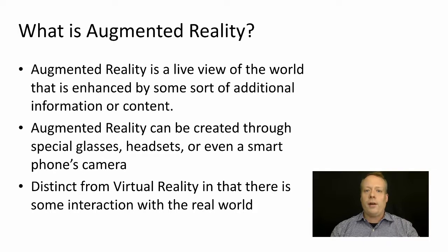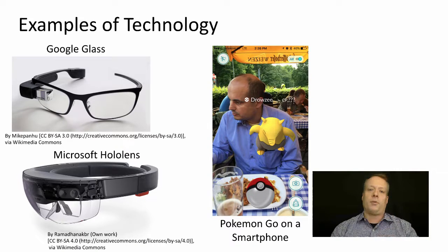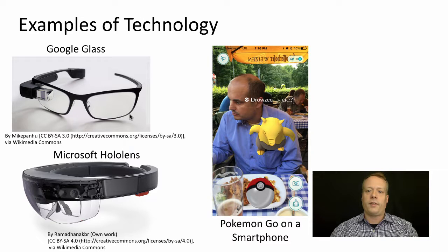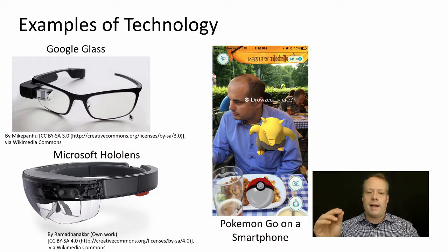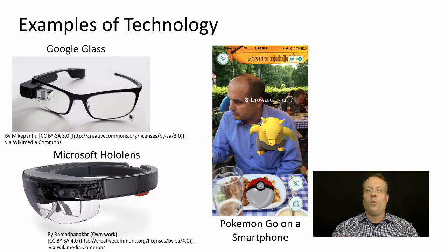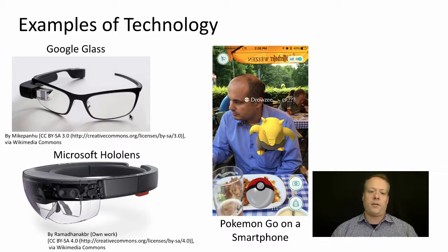How do you create augmented reality? There are a number of different examples of technology out there. Google Glass did this — it had the ability to project a small screen in the corner of your eye where you could see and get content about what was going on around you, and it also had the ability to use its camera to actually process information. For instance, you could see words translated using Google Glass. Microsoft HoloLens, which is a newer piece of technology, is trying this in an even bigger fashion.